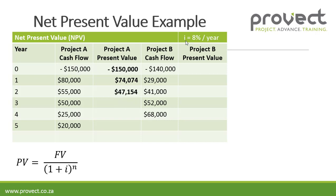For year 3, it's $50,000 divided by (1 plus 0.08) to the power 3. For year 4, it's $25,000 divided by (1 plus 0.08) to the power 4. And for year 5, it is $20,000 divided by (1 plus 0.08) to the power 5.